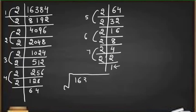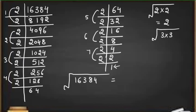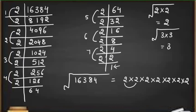When we find the square root, out of each pair we write down the number only once. For example, if we have the pair 2 and 2, we write down just 2 as the answer. If we have 3 and 3, we write down 3. Here we have all 2s in pairs, and we have 7 pairs, so we write down seven 2s. Multiplying: 2×2=4, 4×2=8, 8×2=16, 16×2=32, 32×2=64, 64×2=128. So the square root is 128.